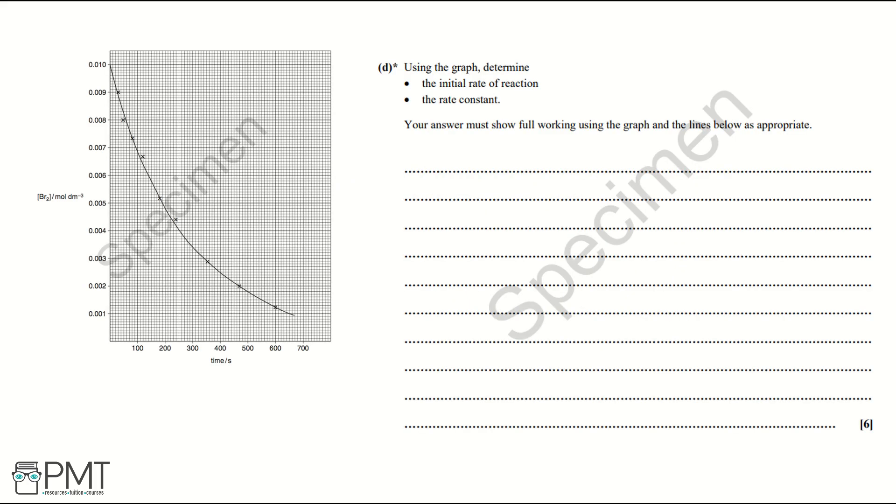Part D: Using the graph determine the initial rate of reaction, the rate constant. Your answer must show full working using the graph and the lines below as appropriate.